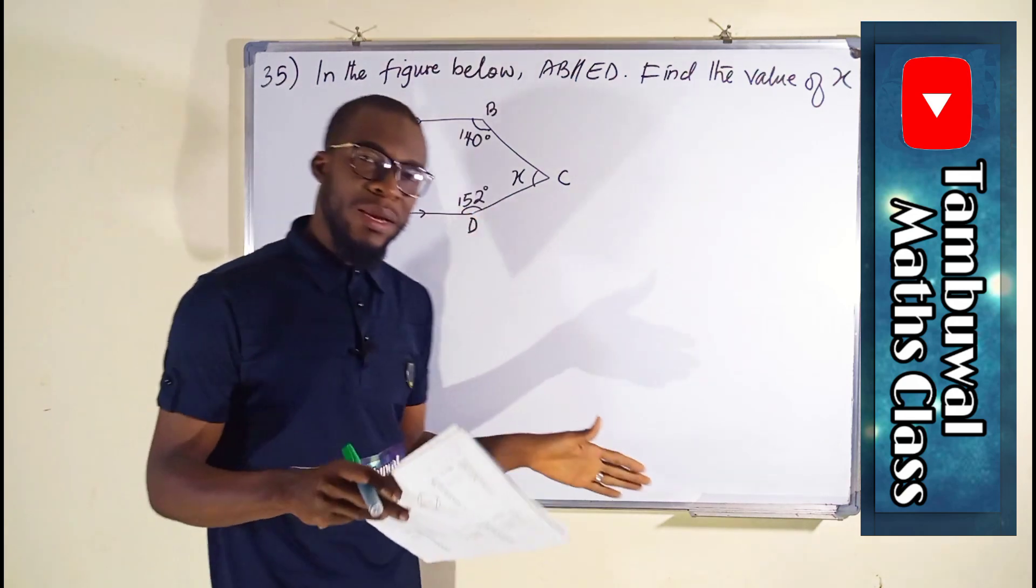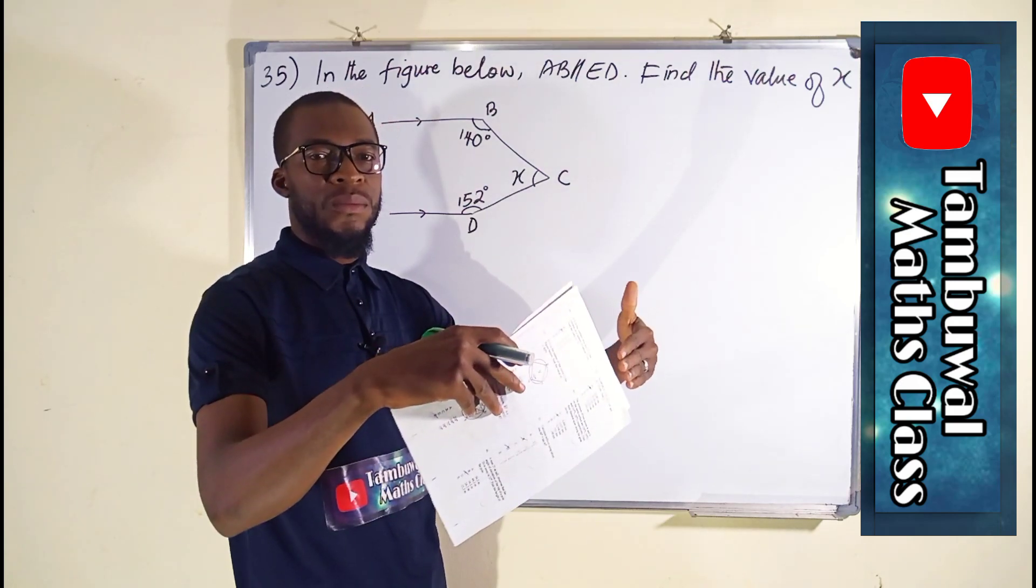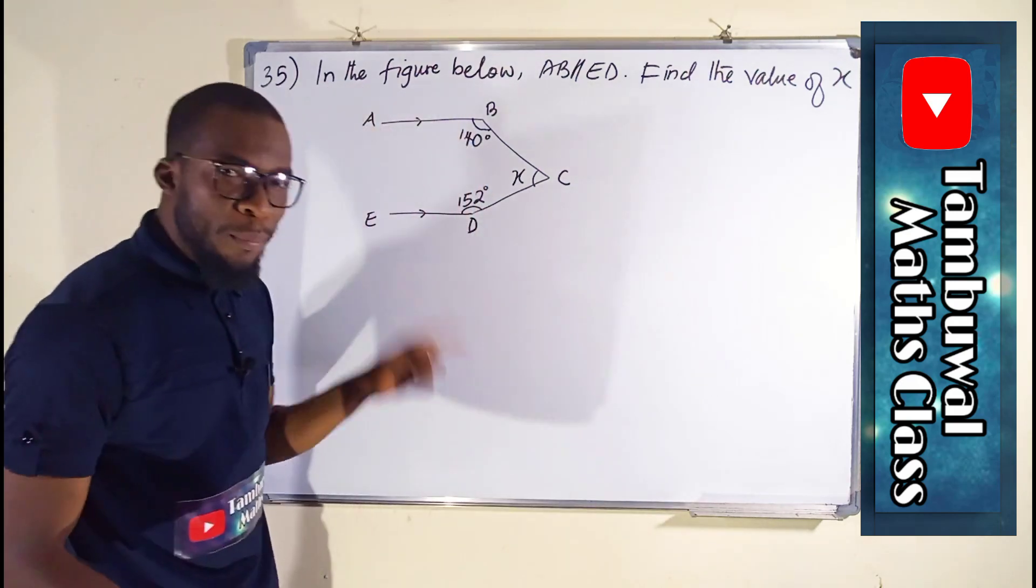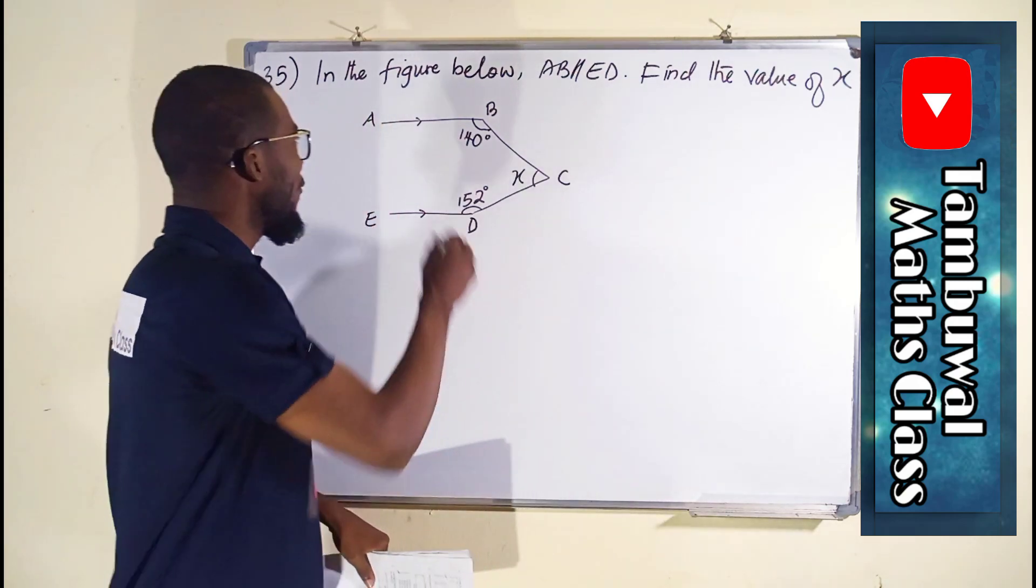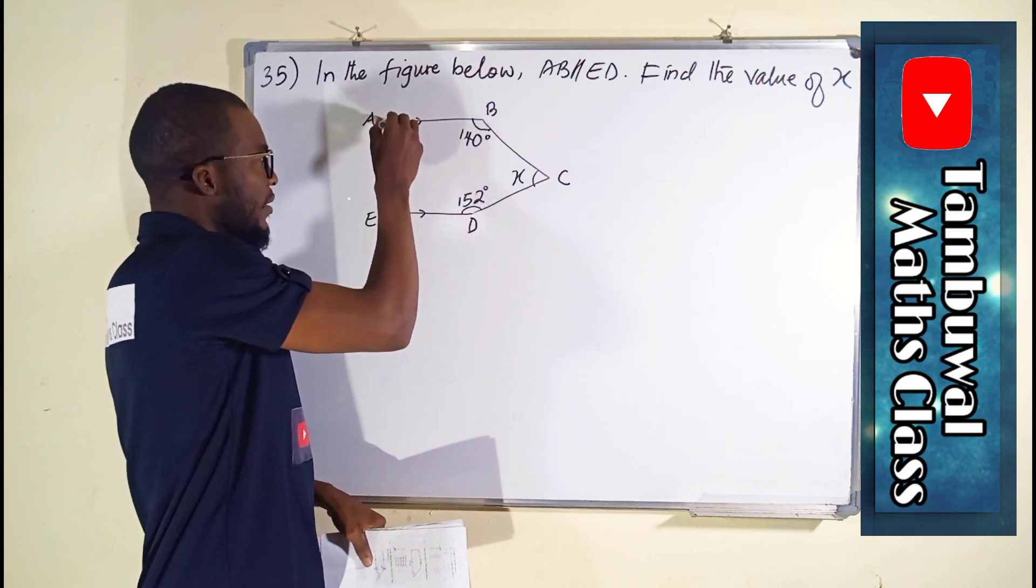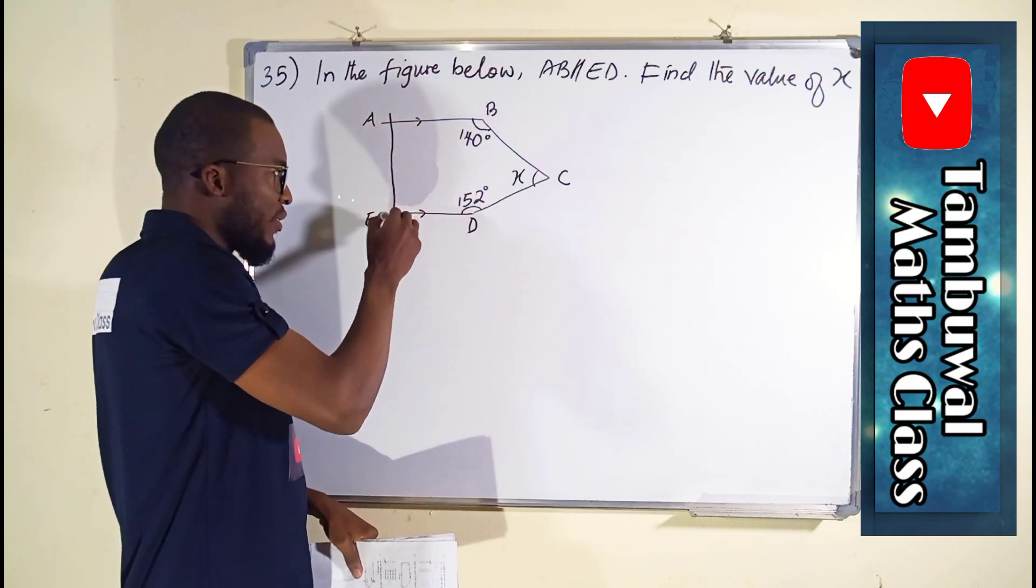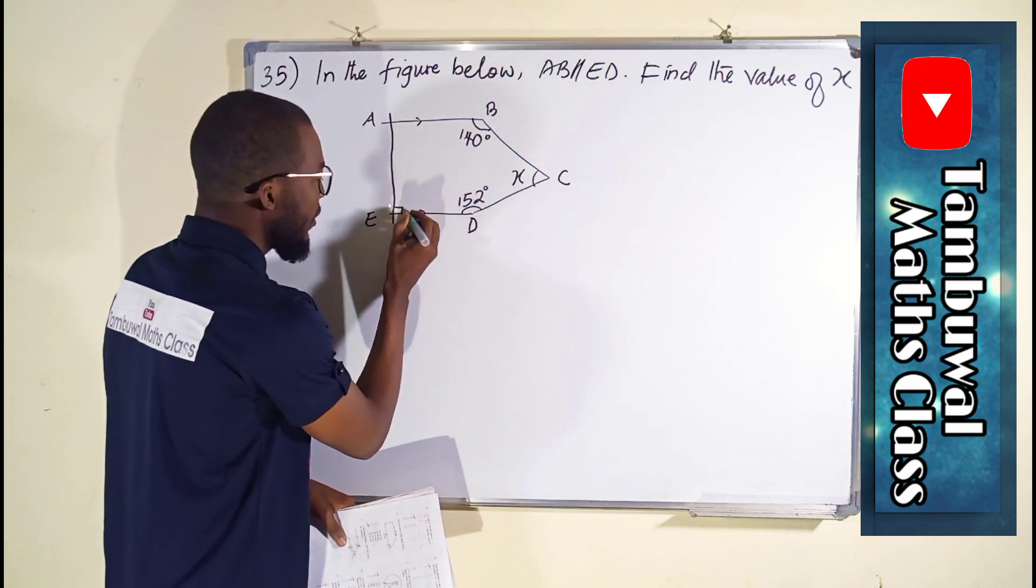If these two lines are parallel, it means they will never meet. If they are parallel, any perpendicular line formed from AB to ED, if it is perpendicular, will form 90 degrees.